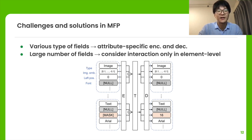First, the variety of fields is handled by an attribute-specific encoder and decoder. Second, the computational cost of modeling a large number of fields is reduced by considering interactions only at the element level.